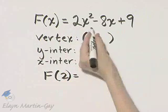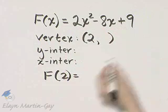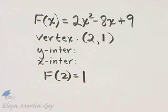That's 2 times 2 squared minus 8 times 2 plus 9. If you find f of 2, you'll find it is 1. So the vertex has coordinates 2, 1.